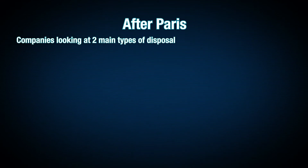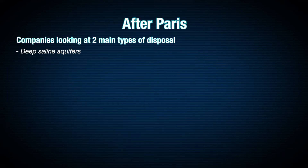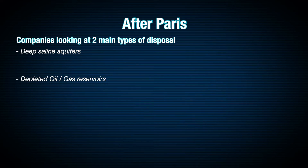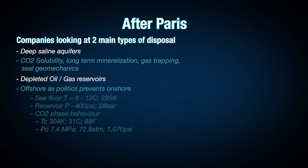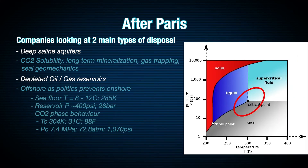After Paris, companies were looking at two main types of disposal: deep saline aquifers, which still form a large part of current investigation, and also depleted oil and gas reservoirs. For example, in the North Sea, companies are looking at how to use existing pipe infrastructure and platforms, potentially delaying decommissioning to create a CO2 sequestration environment. These things typically are offshore because politics tends to prevent onshore CO2 disposal — nobody wants a large CO2 disposal project underneath their house.